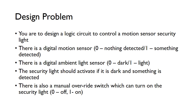We want the security light to activate if it's dark and something is detected. But you might also want to turn it on and off manually, in case you've got a party or something like that. So we're going to have a manual override switch to turn on the security light. If the switch is zero it'll be off, and if the switch is a one the light will be on.